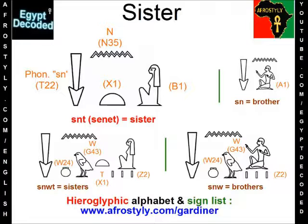There is another thing that tells us it is plural: the three strokes that you see underneath the woman. So that is to say you might come across alternative ways of the word senut being written. Then on the right, finally, you have senu, which is obviously the plural of sen.